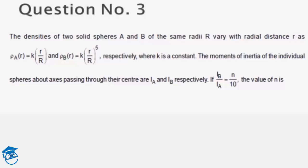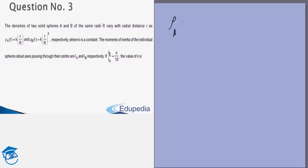In the next question we are given the densities of two solid spheres which have the same radii vary with distance in different ways. For one of them ρ_a(r) = k(r/R). For the other one ρ_b(r) = k(r/R)^5. We want to find the ratio of the moment of inertia.